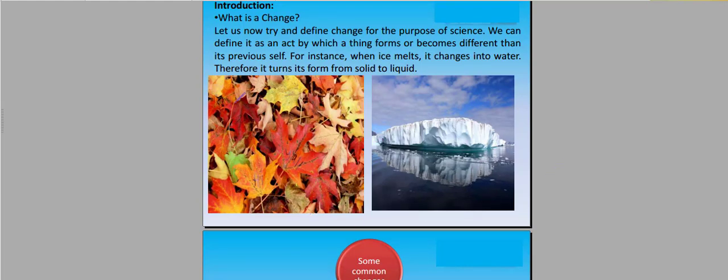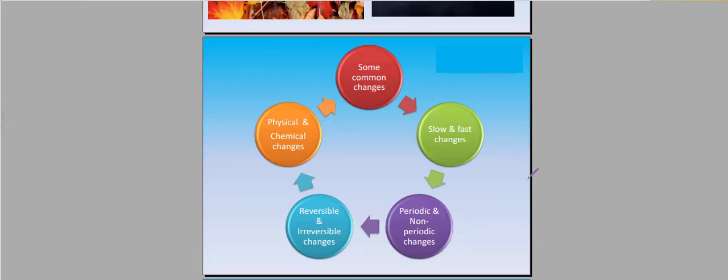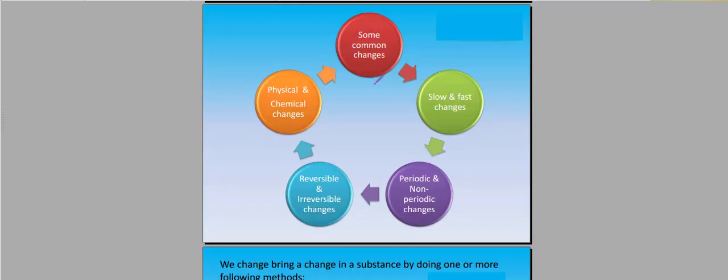You will see that in the summer, plants will dry and in the winter, they will be green. If you have harvested one crop in a season, you will grow another crop in the next season. This is our flow chart which I will show you. Some common changes: slow and fast changes, periodic and non-periodic changes, reversible and irreversible changes, physical and chemical changes.